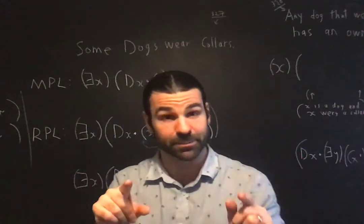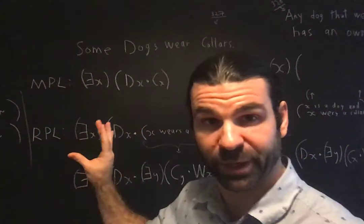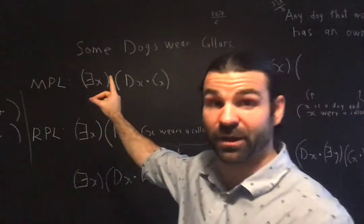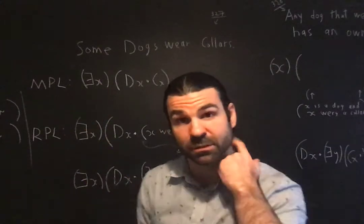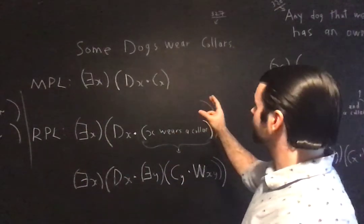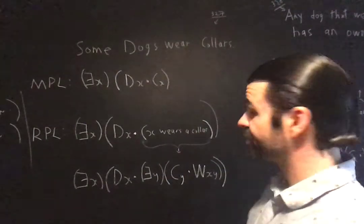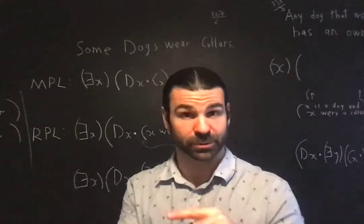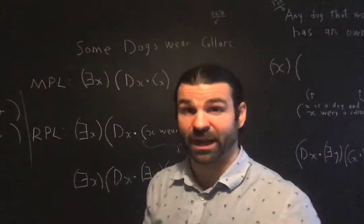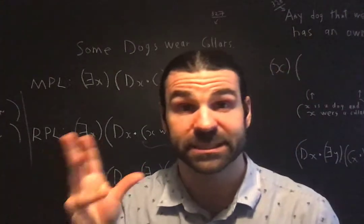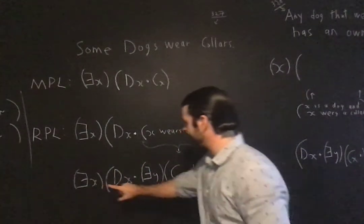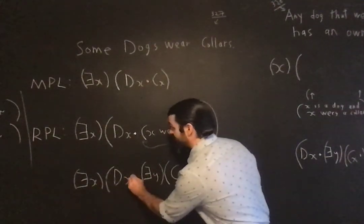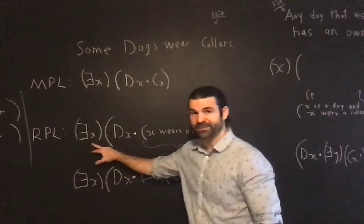Notice what we do keep from monadic predicate logic: the I form. The grasp of this as an I form. This is particular inclusion, two classes. There's the class of dogs, there's a class of things which wear collars. And we're saying that some in the subject class are included in the predicate class. And we will, in our final analysis, keep the I form. It'll be an existential where the scope goes all the way to the end, and it'll be a conjunction.